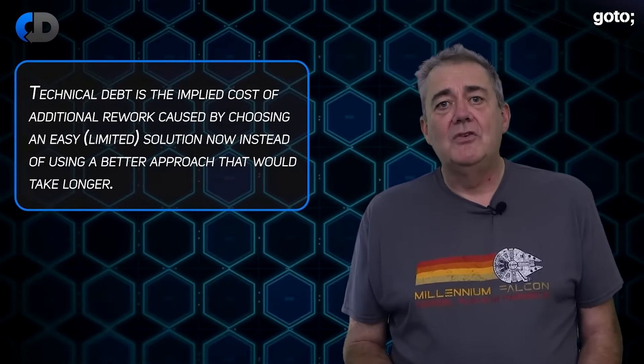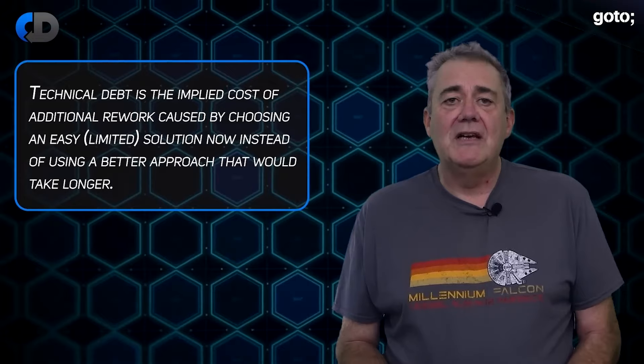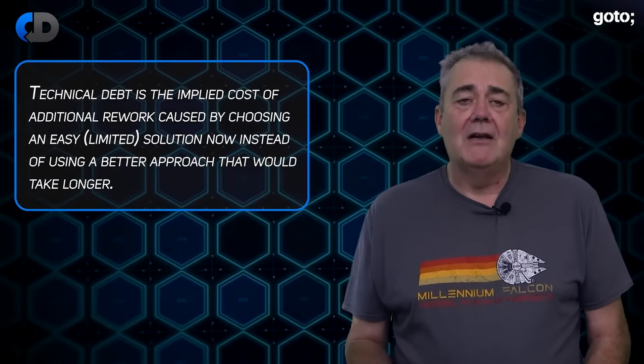Technical debt is one of those ideas — as soon as you hear it for the first time it's kind of obvious what it means. The concept of technical debt was invented by Ward Cunningham. Ward also invented the wiki. So in a rather lovely example of resonance, here's what Wikipedia, the wiki-based encyclopedia on the internet, has to say on the topic of technical debt from its inventor: technical debt is the implied cost of additional rework caused by choosing an easy or limited solution now instead of using a better approach that would take longer.